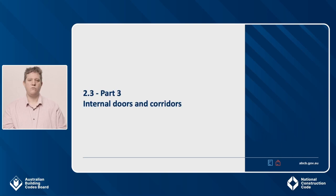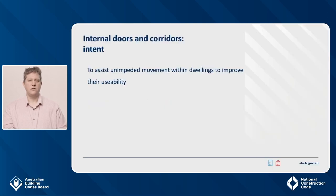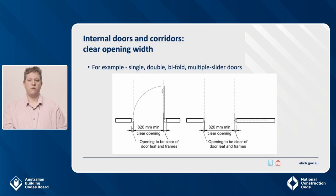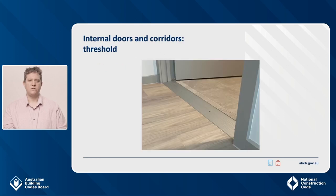The next part of the standard covers internal doors and corridors. The intent of the requirements in Part 3 of the standard is to assist unimpeded movement within dwellings to improve their usability. Internal doors and corridors are covered by H8P1C in NCC Volume 2 and G7P1 in NCC Volume 1, H8D2 in NCC Volume 2 and G7D2 in NCC Volume 1, and Part 3 of the standard. Clause 3.1 requires an internal doorway to have a minimum clear opening of 820 millimetres regardless of the type of door used. The clear opening width is measured in the same way as the entrance door — clear of the door leaf and frames. Note that door handles are allowed to encroach in this zone.